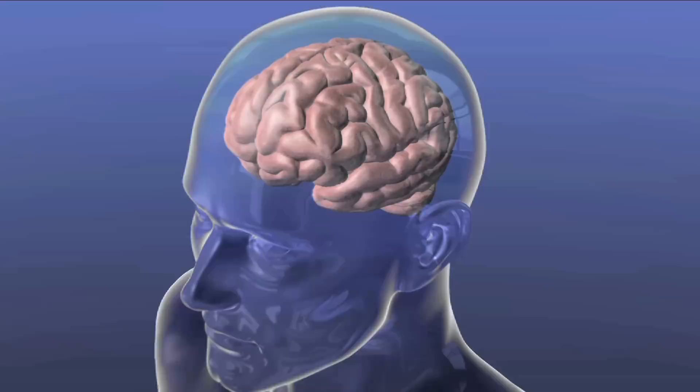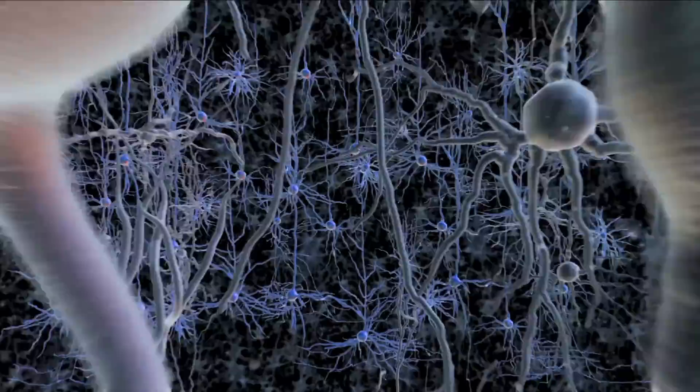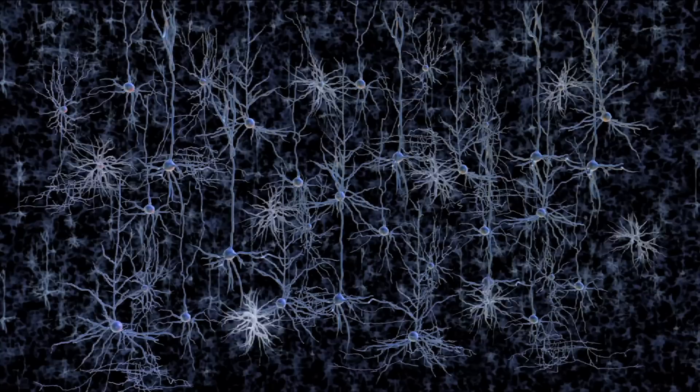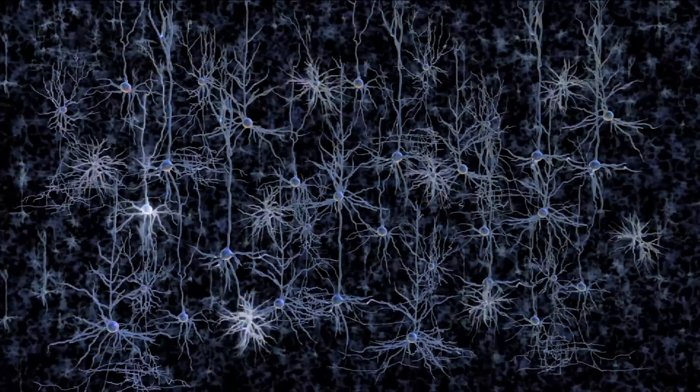Neurons communicate with each other using both chemical and electrical signals. When a neuron is activated by chemical messengers, it produces an electrical pulse that results in similar chemical signals being sent to other neurons to which it is connected.